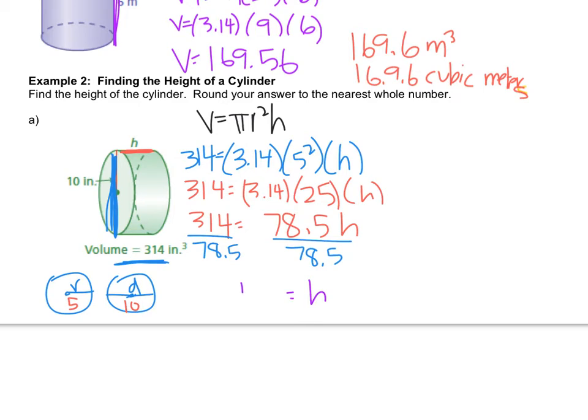And then if you think back to September, we're going to divide both sides by 78.5. So that gives me 4. Now the label in the last one was cubic meters because we were talking about volume. What would be the label for height? If I said what's your height, would you say I'm five cubic feet tall? No, you just say I'm five feet tall. So height is not a three-dimensional measurement, it's what we call a linear measurement, so it would just be four inches.